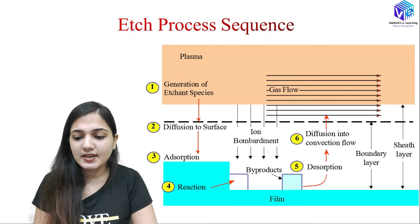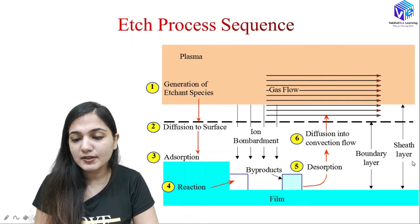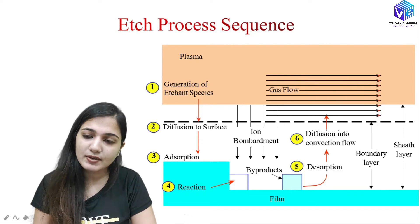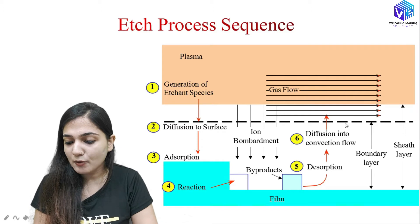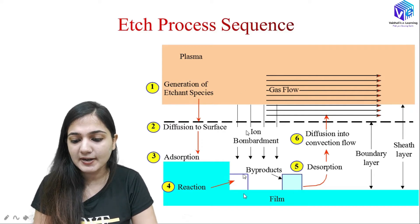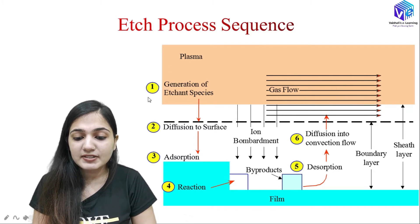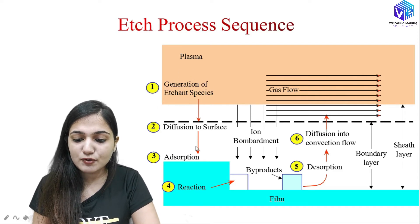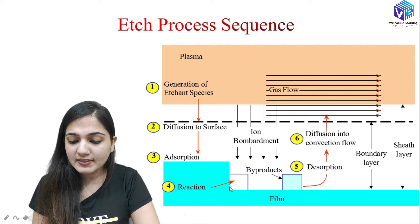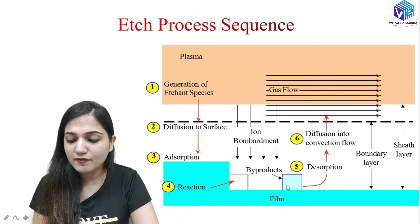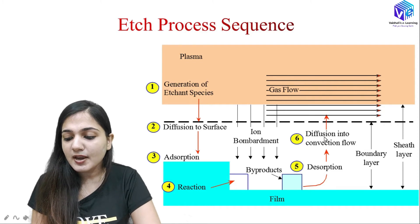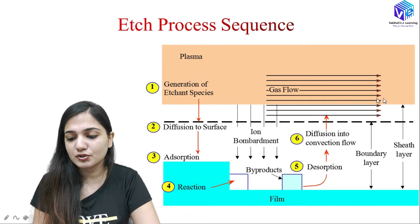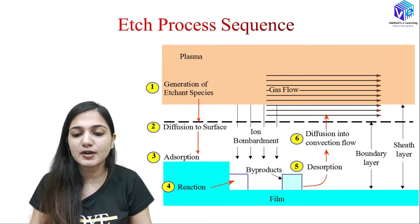This is the etch process sequence. We have the plasma, the sheath layer, and the boundary layer. Both chemicals and ion bombardment are used. Etchant species and chemical etchants are present, and etchants diffuse to the surface. Then we have adsorption and reaction — when the etchant reacts and ions are bombarded, the reaction rate is high. Byproducts are formed, they desorb from the surface, and then diffuse into the convection layer where gas flow carries them away.